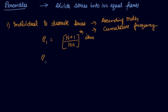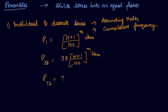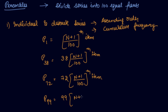If you have to find out P38, you calculate 38 into (n+1) divided by 100 to get the item. For P72, it is 72 into (n+1) divided by 100. Similarly, for P99, it is 99 into (n+1) divided by 100.